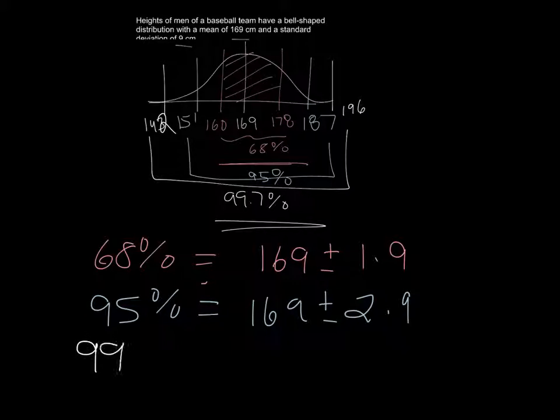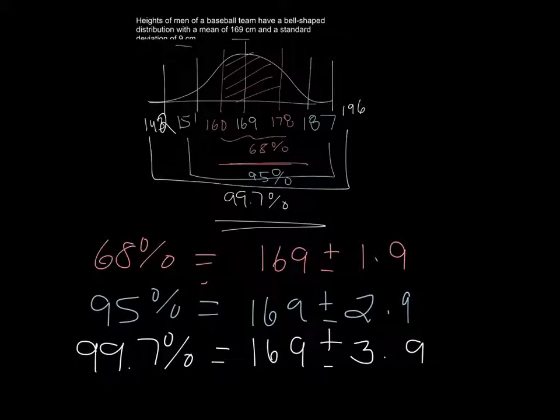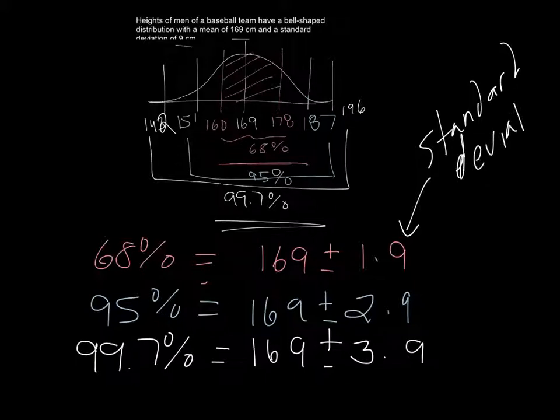And then your 99.7% would equal your mean plus or minus 3 times your standard deviation. So this column is your standard deviation, and this is the definition of the empirical rule.